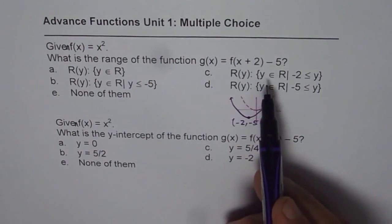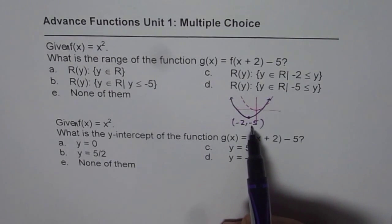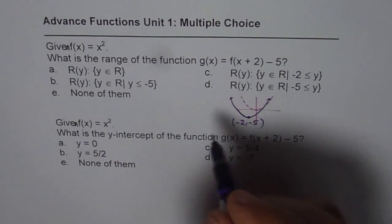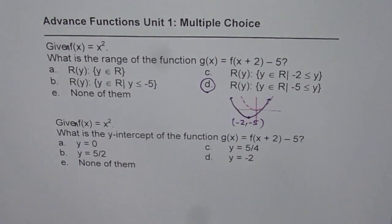And we are interested in range. Clearly, it is greater than -5. So, y ≥ -5 is the answer. That is how you can get your answer.